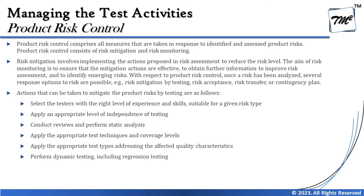Risk mitigation involves implementing the actions proposed in risk assessment to reduce the risk level. The aim of risk monitoring is to ensure that mitigation actions are effective, to obtain further information to improve risk assessment, and to identify any emerging risks. Product risk analysis is not a one-time activity — at the beginning of the project we may not have full visibility to identify all risks.